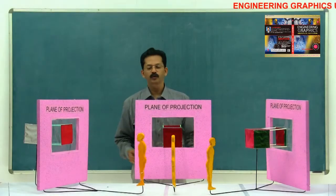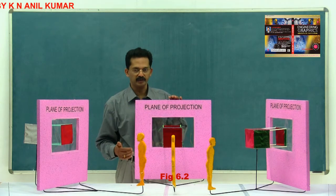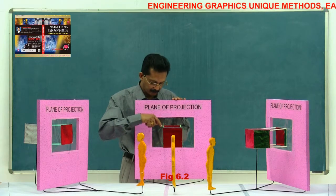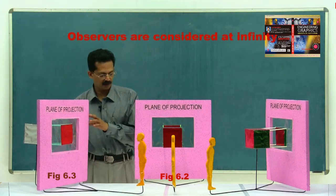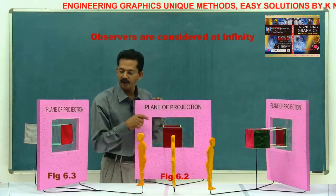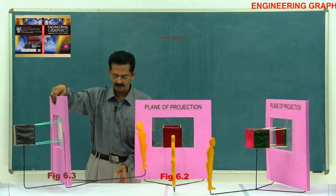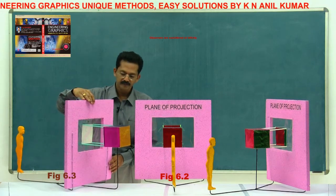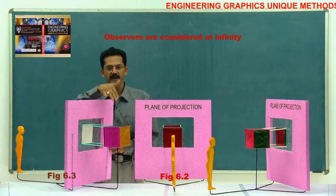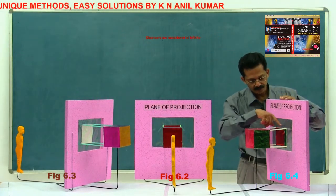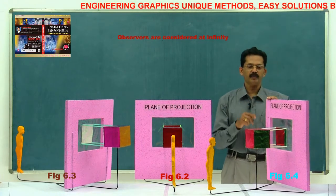Parallel projections are classified into two types: oblique projection and orthographic projection. In orthographic projection, the projectors are perpendicular to the plane of projection — this holds whether the object is in front of or behind the plane of projection. In oblique projection, the projectors are inclined to the plane of projection. We will study oblique projection in detail later.